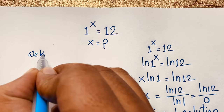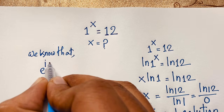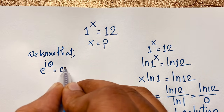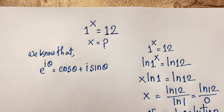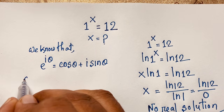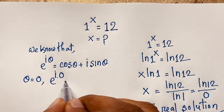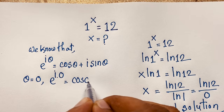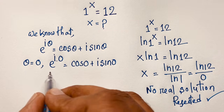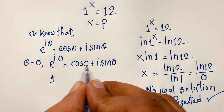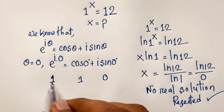We know the Euler's formula: e^(iθ) = cos(θ) + i·sin(θ). If we let θ = 0, then e^(i·0) = cos(0°) + i·sin(0°). Since e^0 = 1, cos(0°) = 1, and i·sin(0°) = 0, we get 1 = 1. This confirms the formula.